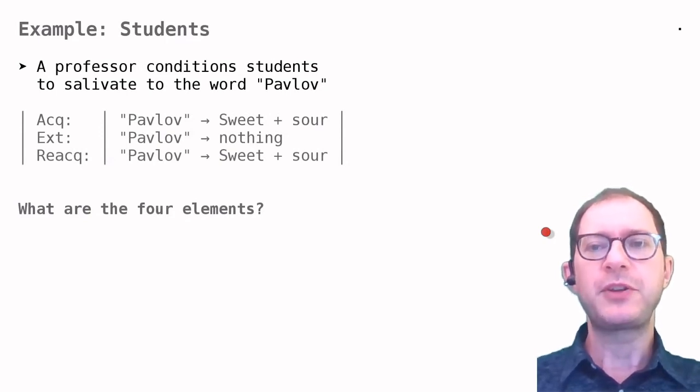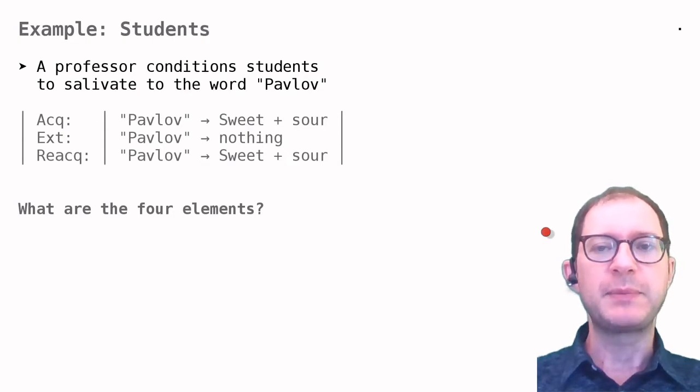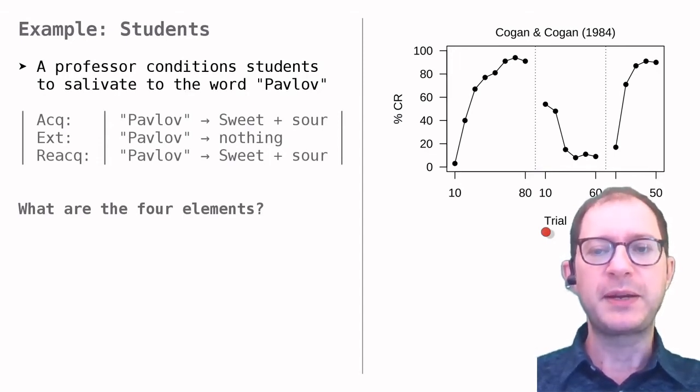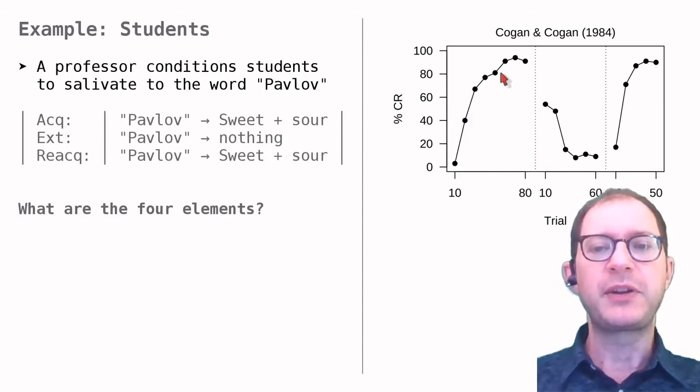Our next example is a classroom demonstration of Pavlovian conditioning from the 1980s. The students were provided with some instant lemonade powder, and were instructed to taste a bit of it any time the professor spoke the word Pavlov. Once in a while, the professor said Pavlov, but asked the students not to taste the lemonade powder. Rather, the students had to raise their hand if their mouth watered when hearing the word Pavlov. The first part of this graph shows the percentage of students who raised their hands over the course of the experiment. As we can see, hearing Pavlov did not initially produce salivation, but it increasingly had this effect.